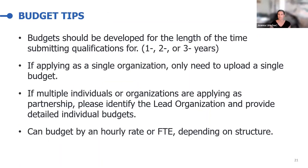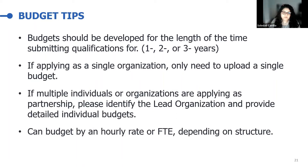Here are the budget tips. The budget should be developed for the length of time an organization is submitting qualifications for. If an organization anticipates contracting for a year, the budget should be for that year; if for three years, the budget should estimate three years. If you're applying as a single organization, you only need to upload a single budget. If multiple individuals or organizations are applying in partnership, they would need to identify a lead organization and include detailed budgets for each partner. The budget can include an hourly rate or an FTE, depending on the structure of each organization.